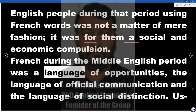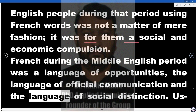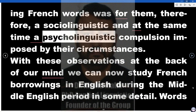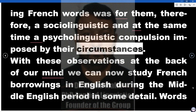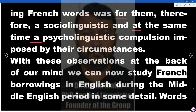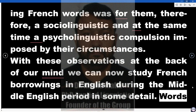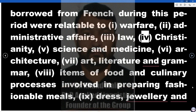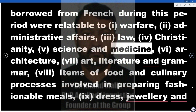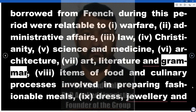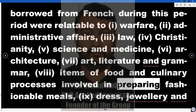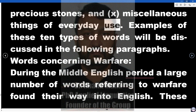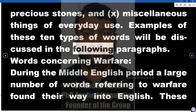French during the Middle English period was a language of opportunities, the language of official communication, and the language of social distinction. Using French words was for them, therefore, a sociolinguistic and at the same time a psycholinguistic compulsion imposed by their circumstances. With these observations at the back of our mind, we can now study French borrowings in English during the Middle English period in some detail. Words borrowed from French during this period were relatable to ten types, examples of which will be discussed in the following paragraphs.